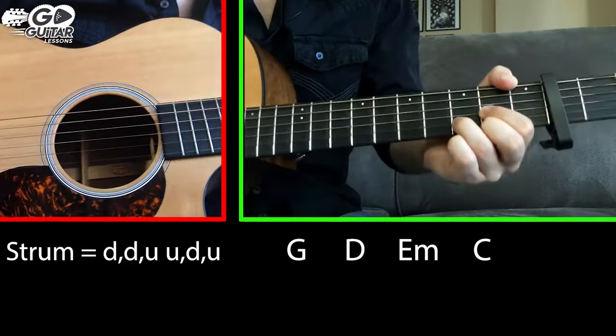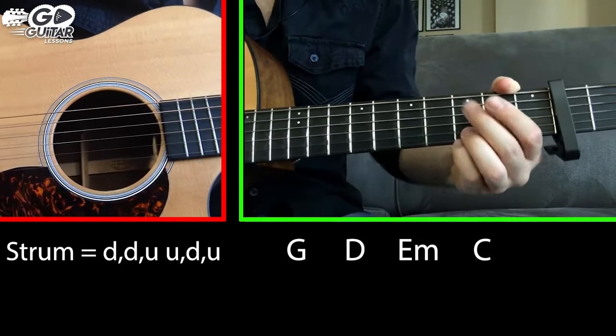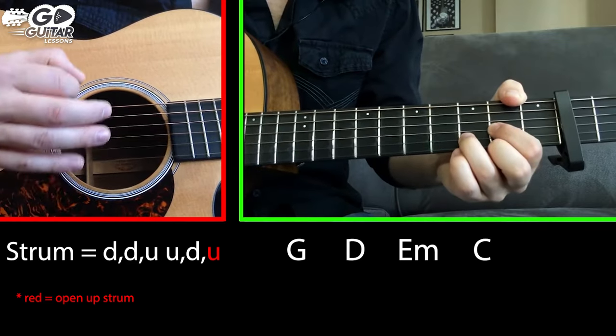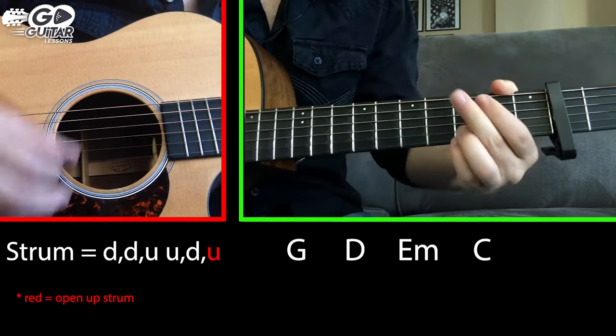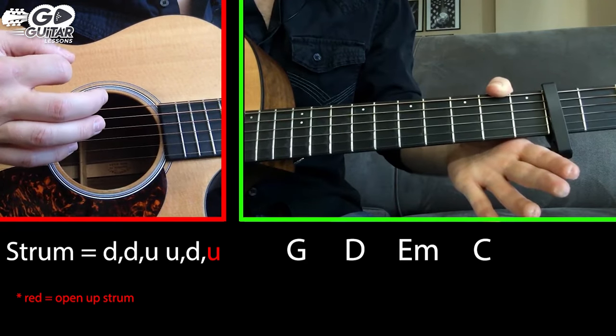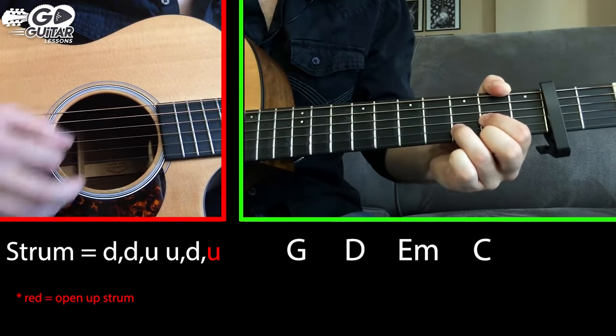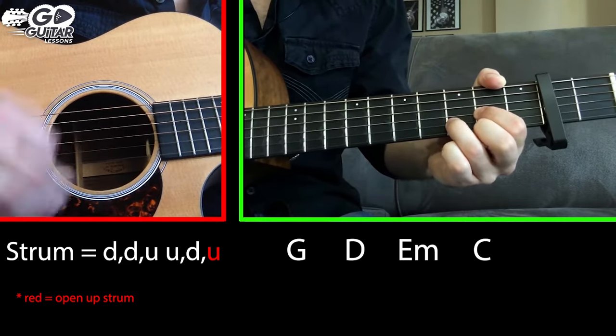Now to help us out, we have to use something I always talk about and that's the open up stroke. So on the very last up, we have to lift off. So it's going to be down, down, up, up, down, up. And then go to a D chord and do the same thing. Down, down, up, up, down, up.